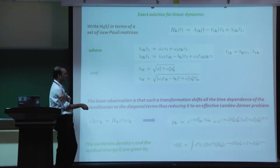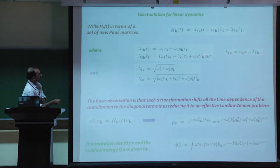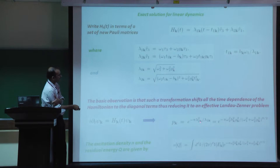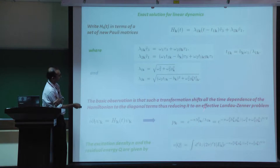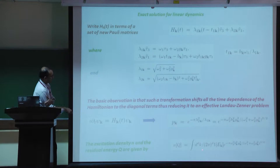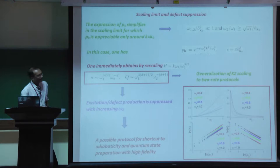Once we understand this, we can read off the probability from the standard Kibble-Zurek result, which turns out to be given by P(k) = exp(-pi * lambda_{2k}^2 / lambda_{1k}), where lambda_{2k}^2 is the off-diagonal matrix element squared divided by the rate at which energy changes, lambda_{1k}. The defect density is then given by the momentum integral of P(k).